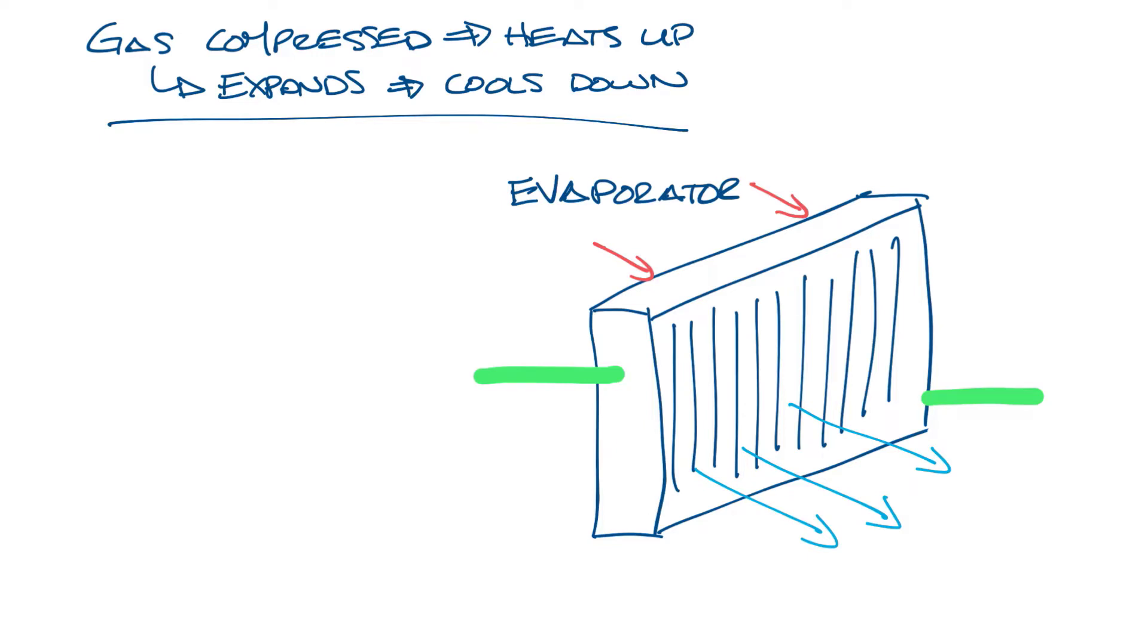The transfer of heat from the air to the refrigerant lowers the temperature of the air, so it can be delivered to the occupied space for cooling. It also causes the refrigerant to evaporate. So say you have 40 degree liquid refrigerant going into the evaporator. After the air passes through and the heat transfer happens, it comes out at, say, 50 degree vapor. So this is your evaporator.